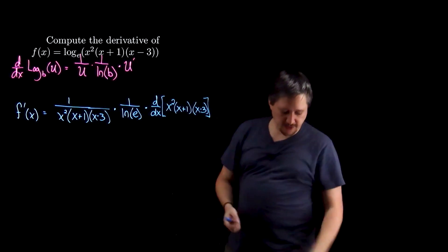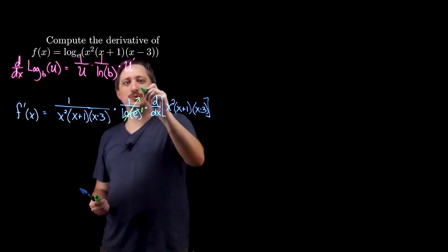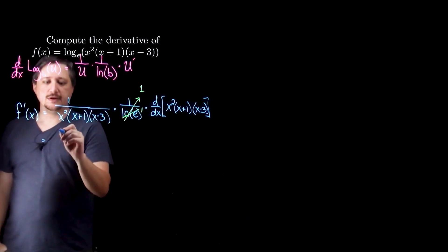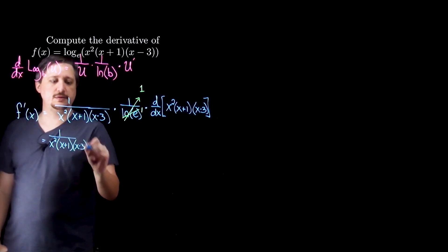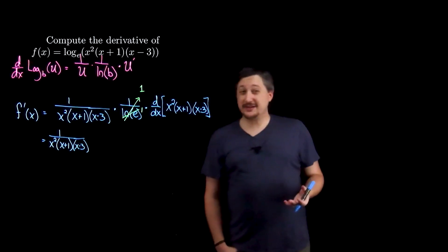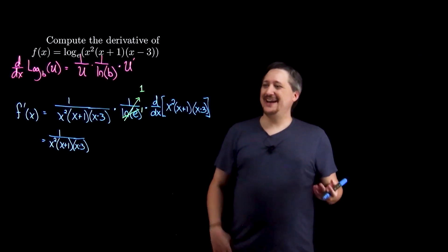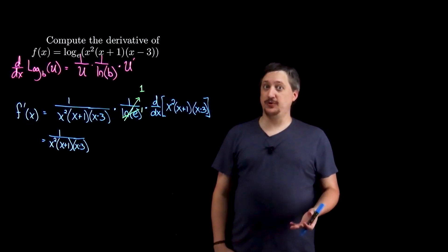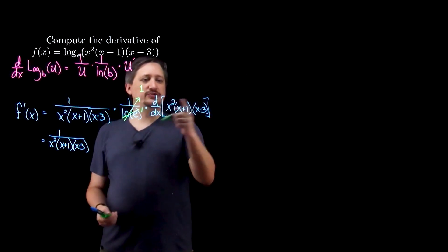Natural log of e is just 1, which means 1 over 1 is just 1, so I can simplify. In particular I'm going to have 1 over x squared times x plus 1 times x minus 3. But I still have this derivative. There are three things here, so I could do a triple product rule, but that's obnoxious. I notice each of these is a polynomial term, so instead I'm going to put these together and get a polynomial.